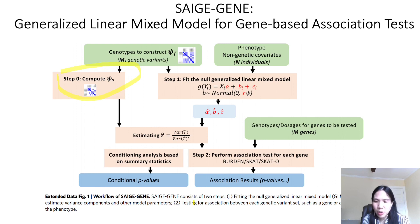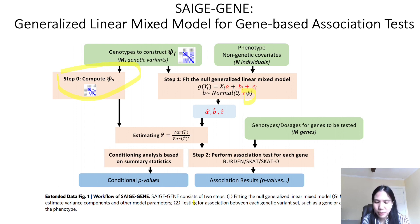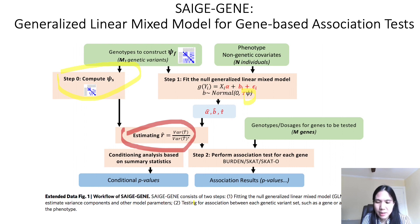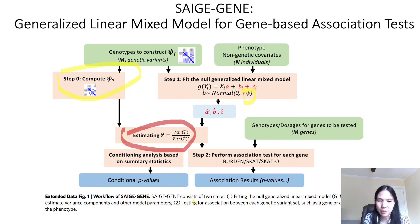Note that we still use the full GRM to fit the null model in step 1. The sparse GRM is mainly used after step 1 and before step 2 to estimate the ratio of variance of score test statistics with the full GRM versus the sparse GRM. So in step 2, instead of calculating the variance using the full GRM for each gene or variant set, which is quite time-consuming, we can use the sparse GRM and this pre-estimated ratio to approximate the variance with the full GRM, further reducing step 2 computation time.